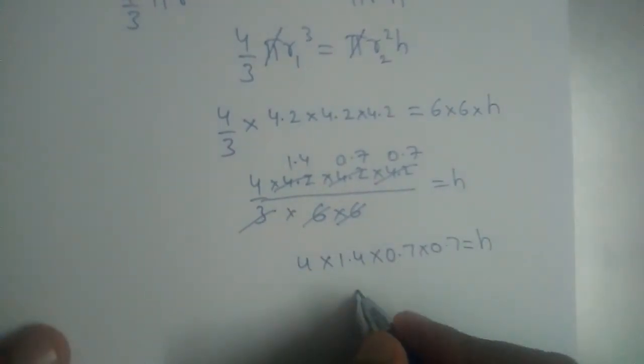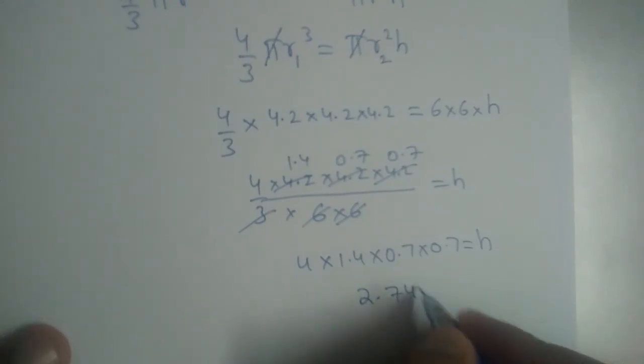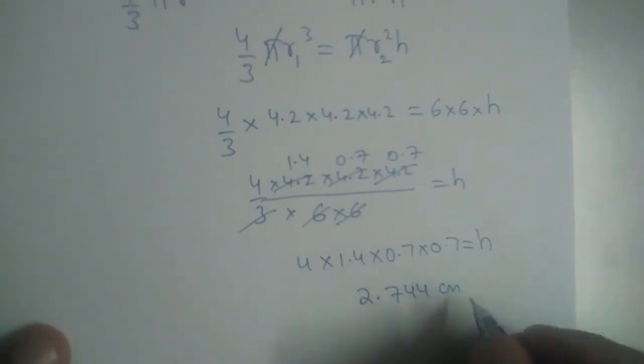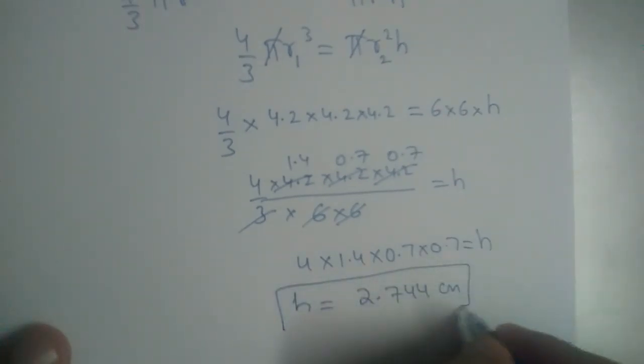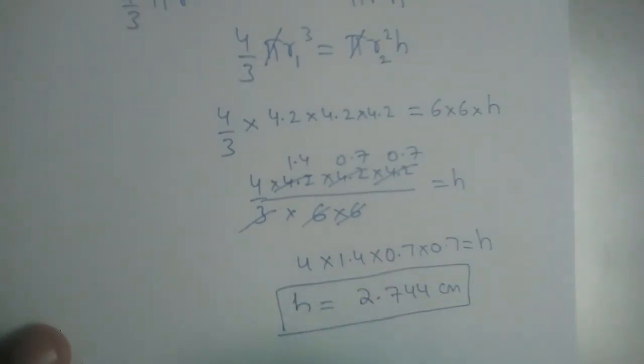Multiplying these values, h = 2.744 cm. So this is the height of the cylinder.